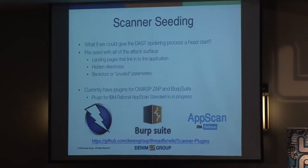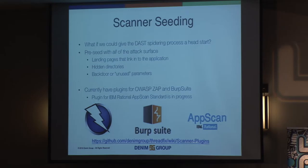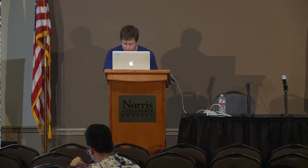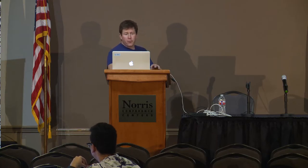The first use case we'll look at is scanner seeding. One challenge with dynamic testing is you start not knowing anything about the application attack surface. With the data structure we've built, we have in theory a list of all the URLs the application will respond to and all the parameters that can change its behavior. I can take that and feed it to the dynamic scanner, so it knows the application attack surface before we even begin the scanning process.